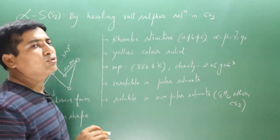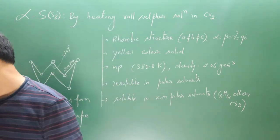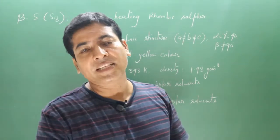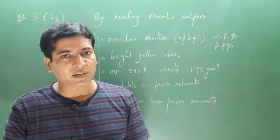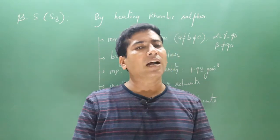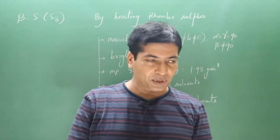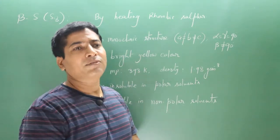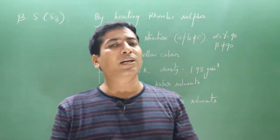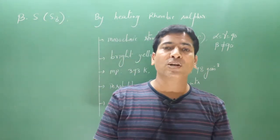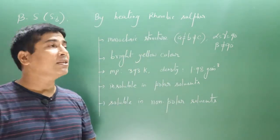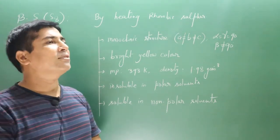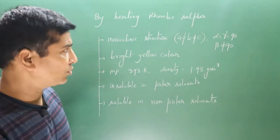Now let's move on to beta sulfur, another allotrope of sulfur. The chemical formula of beta sulfur is also S8. Alpha sulfur and beta sulfur have the same molecular formula, but the arrangement of atoms is different, which is why they show different properties. Beta sulfur can be prepared by heating rhombic (alpha) sulfur above 369 Kelvin, at which point it converts into beta sulfur. Conversely, when beta sulfur is cooled below 369 Kelvin, it converts back into alpha sulfur.